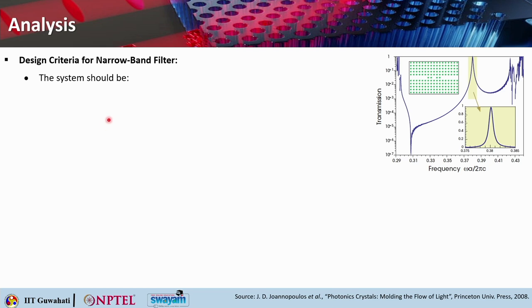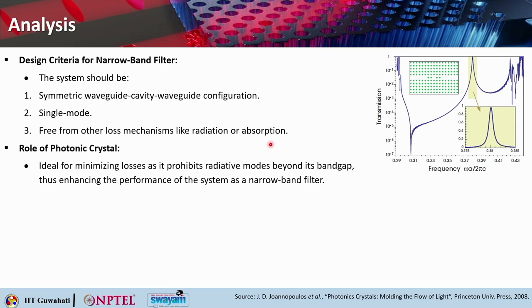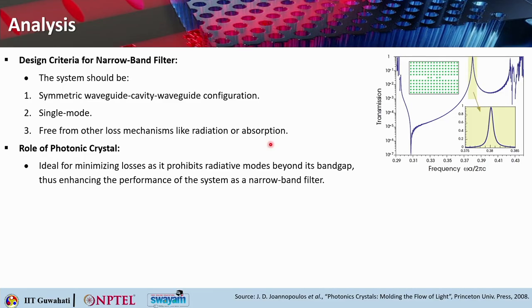The main design criteria for a narrowband filter: the system should have a symmetric waveguide-cavity-waveguide configuration; the waveguides and cavity must be single-mode and free from other loss mechanisms such as radiation or absorption. The photonic crystal is ideal for minimizing losses as it prohibits the radiative modes beyond its band gap, thus enhancing the performance as a narrowband filter. In summary, we have derived the sufficient conditions to achieve a narrowband filter with 100% transmission using TCMT.